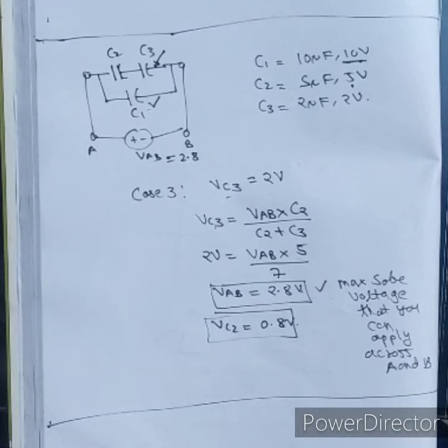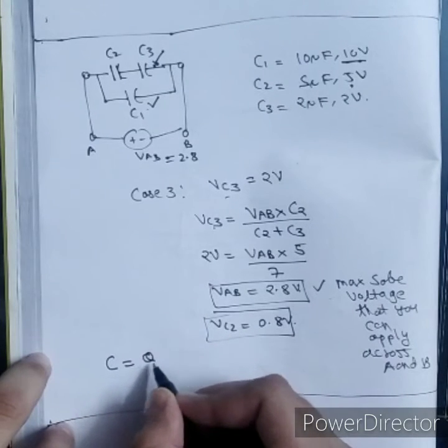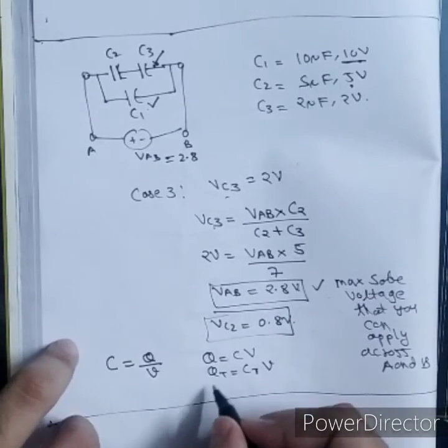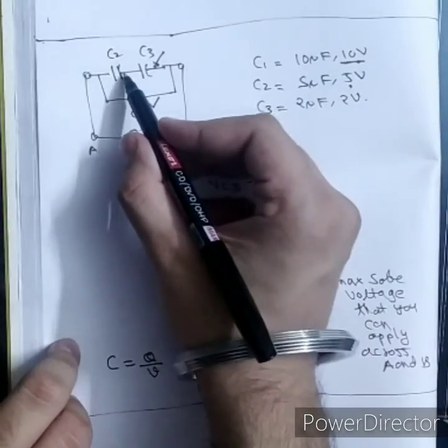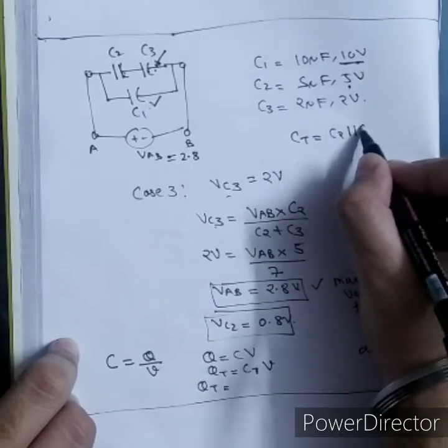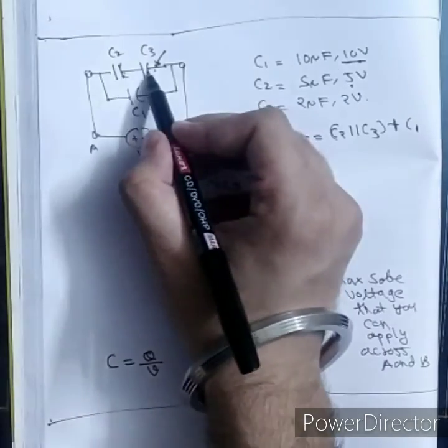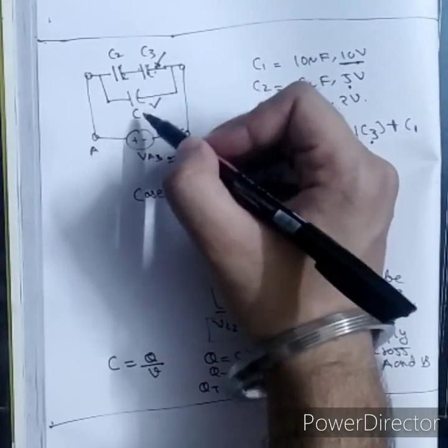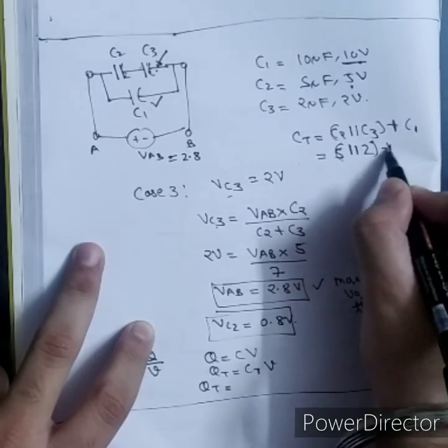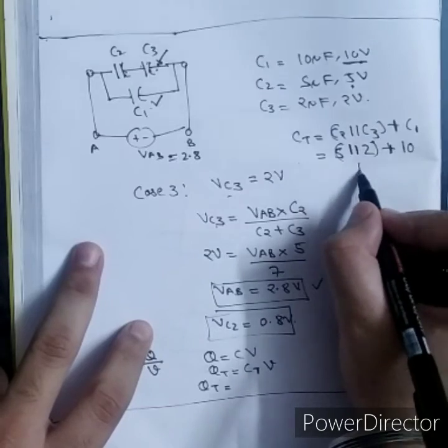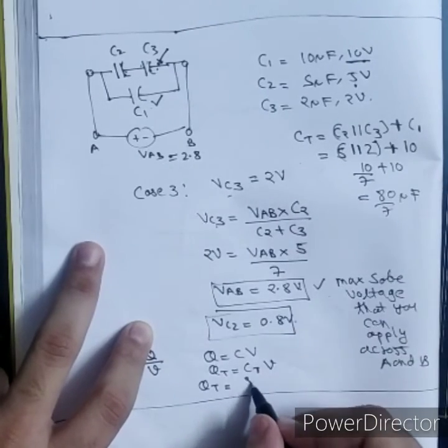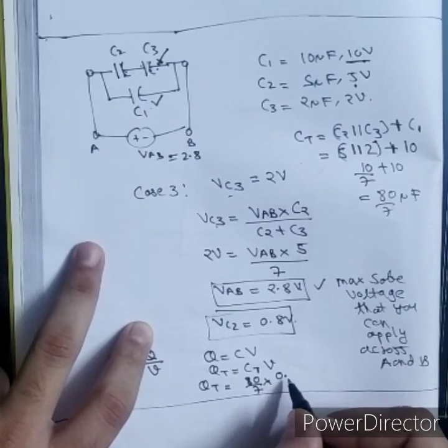Now I have to find total charge stored. We know C equals Q by V, so Q will be CV. QT will be CT by V. Overall capacitance: these two are in series, so CT will be C2 parallel with C3 plus C1. These two are in series, C2 parallel with C3, and then these two are in parallel, so we add C1. C2 is 5 parallel with 2 plus C1 is 10. 5 into 2 is 10, 10 by 7 plus 10. This will be 80 by 7 microfarad. This will be 80 by 7 into 2.8.